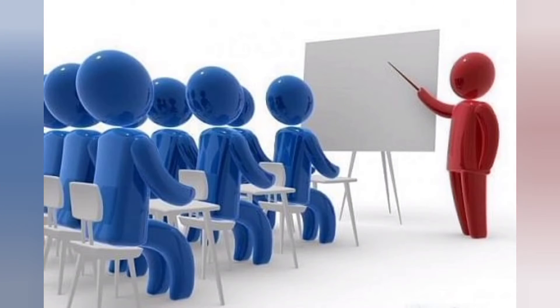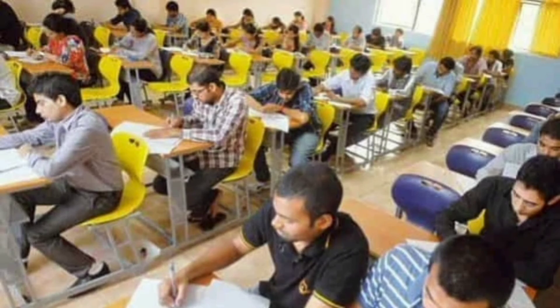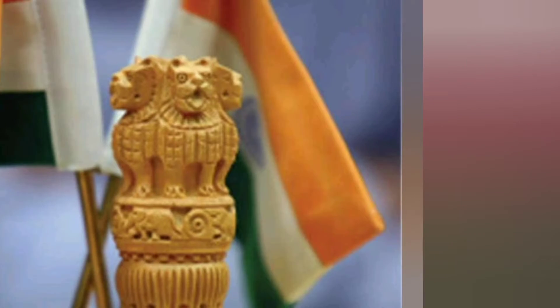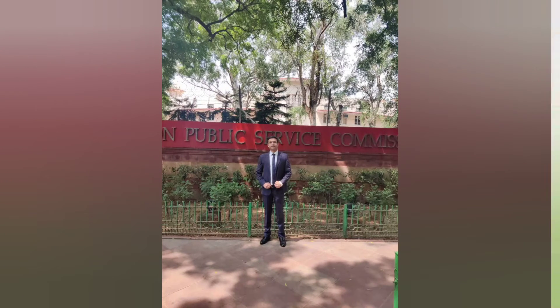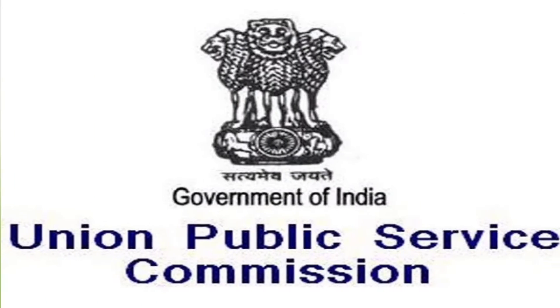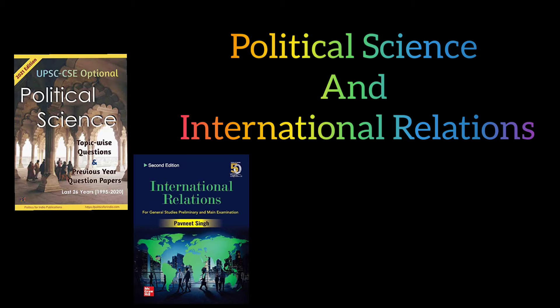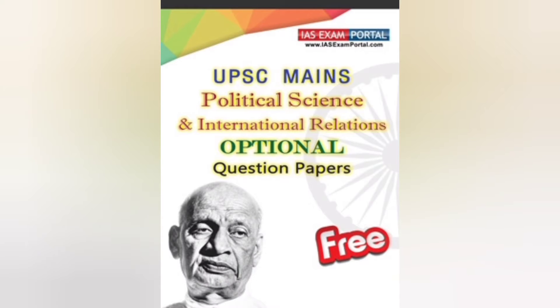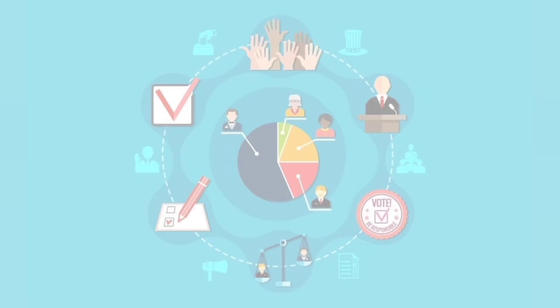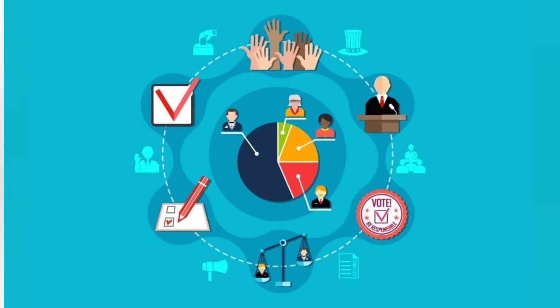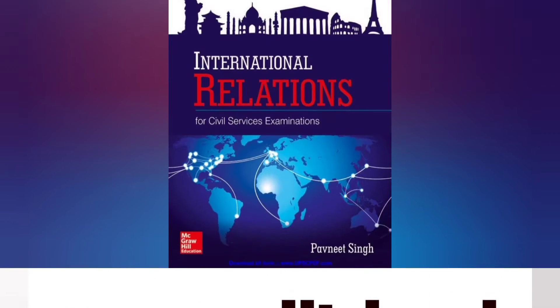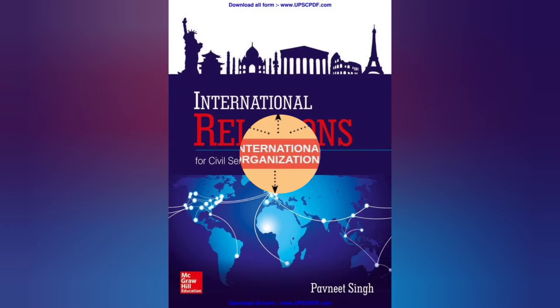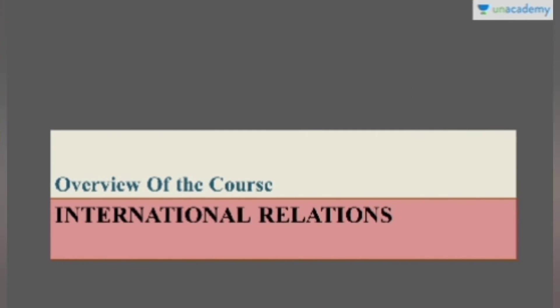If you are confused between Political Science and Sociology as your optional subject for the IAS exam, read on for a comparative analysis of both subjects. Political Science is a social science dealing with systems of governance, political thoughts, political behavior, and the analysis of political activities. International Relations also forms a part of this subject in the UPSC exam.